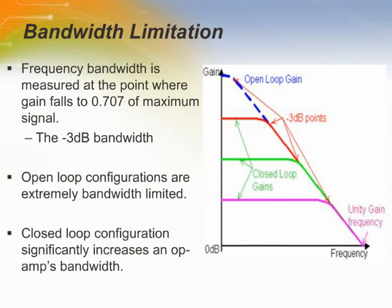In closed-loop configuration, the DC gain of the amplifier is reduced; however, the op-amp bandwidth is much wider, meaning the frequency at which the op-amp starts rolling off has increased. The frequency at which the op-amp gain is equal to 1, or zero decibels, is called the unity gain frequency.